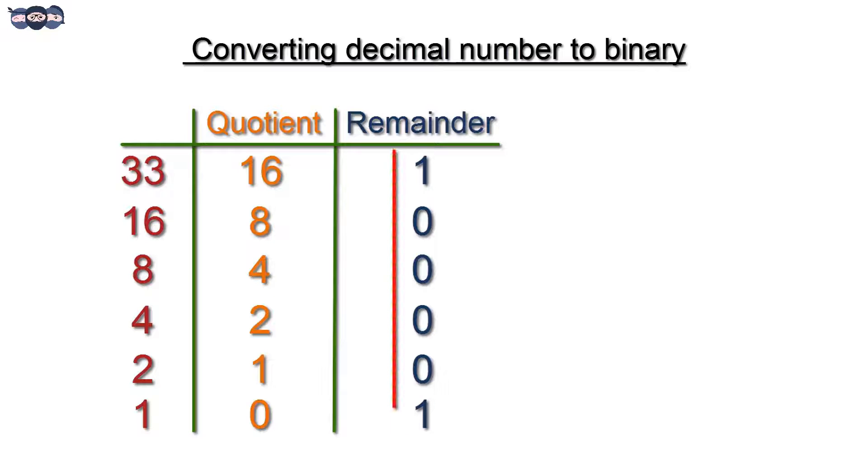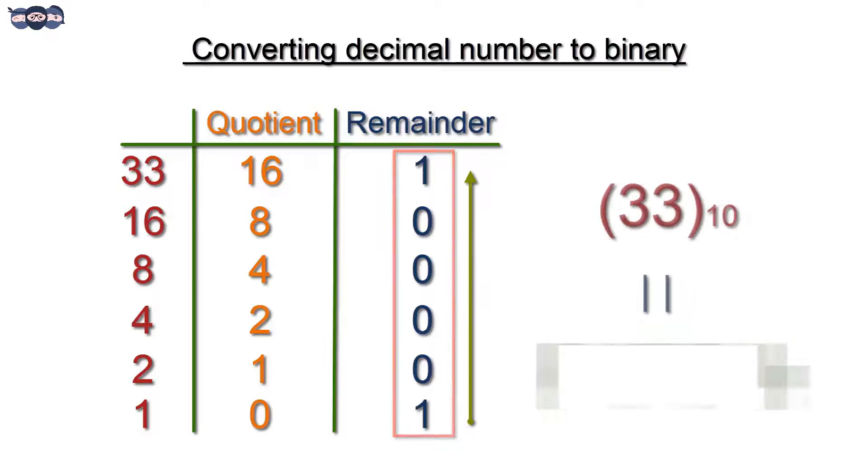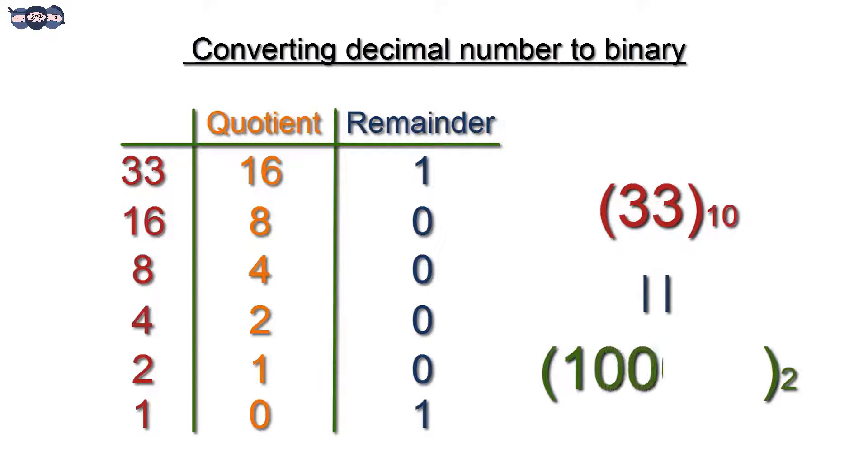1 on division by 2 produces 0 as quotient with 1 as remainder. We now obtain the binary of 33 by writing the remainder in bottom to top fashion. The binary of 33 is 100001.